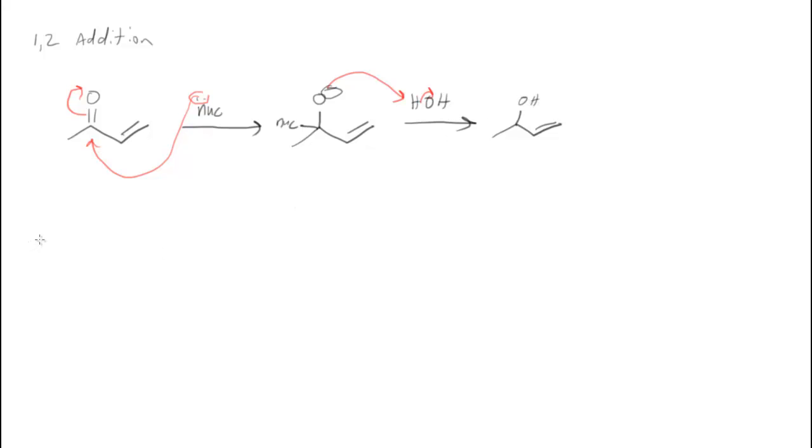The other possibility is a 1,4 addition, or a conjugate addition, where the nucleophile adds to the end where the alkene is, or the beta end of the alpha-beta unsaturated carbonyl, pushing this electron pair over, pushing this electron pair up onto oxygen.